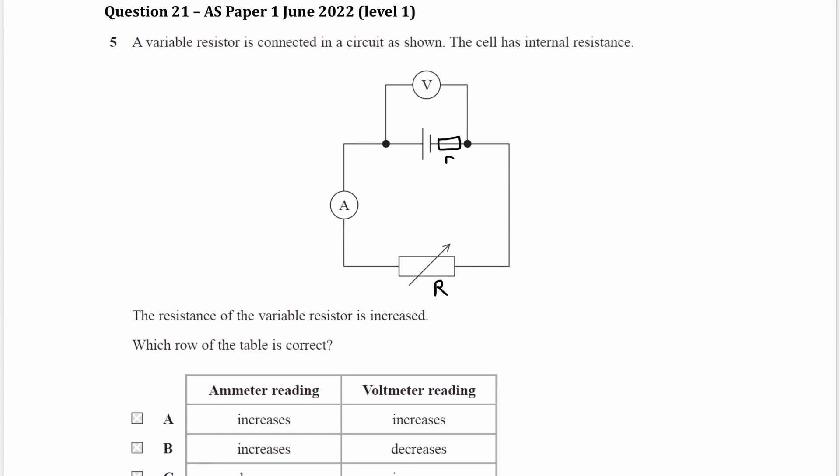And we're told that we're increasing the resistance of the variable resistor, so this is going up. As voltage splits in the same ratio as resistance for resistors in series, these two resistors are in series, so if one of the resistances goes up, it gets a greater share of the voltage, and this internal resistance gets a lower share of the voltage.